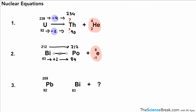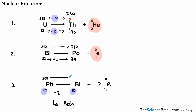For the next example, we have beta decay. Remember there's no change in the atomic mass, so it stays as 212. The atomic number — the number of protons — we add one, so it goes from 83 to 84. For the last one, we haven't been given what kind of decay it is, but we can work it out: the atomic number for lead (Pb) has gone from 82 to 83, which is plus one, and that happens with beta decay. So the third example is beta decay; we add in our beta particle with zero and minus one, and the mass number stays at 209.